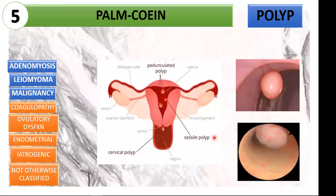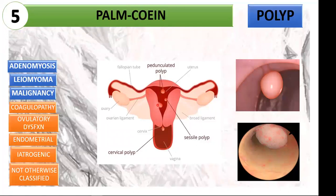First is AUB-P: endometrial polyps. These are overgrowths of endometrial tissue containing glands and blood vessels covered with epithelium. Two types are pedunculated polyps (with a stalk) and sessile polyps (with a flat base). This is most commonly found in reproductive-age women, and estrogen stimulation is the underlying mechanism. These polyps increase the overall surface area, leading to heavier blood loss. A polyp may also be found at the cervix.